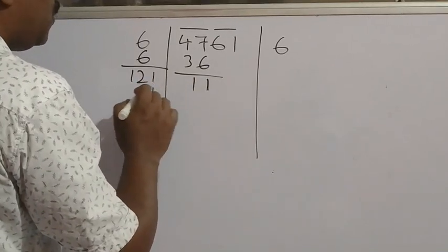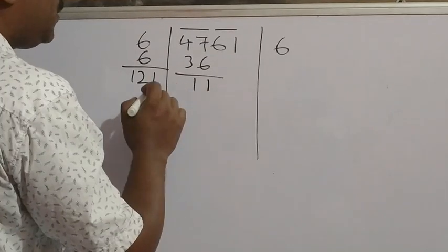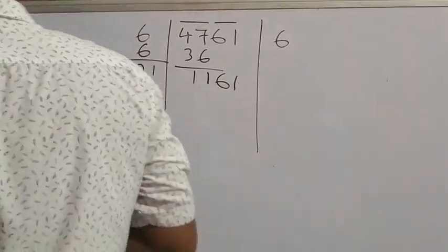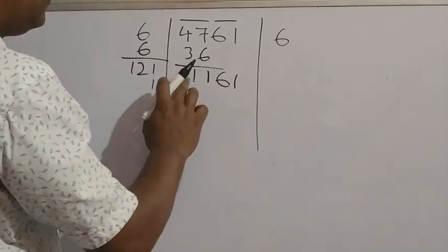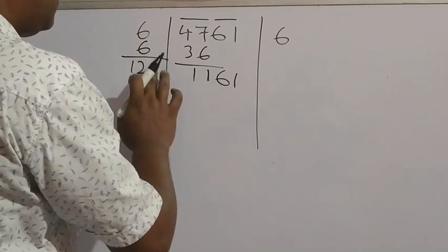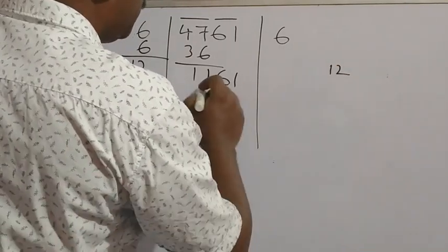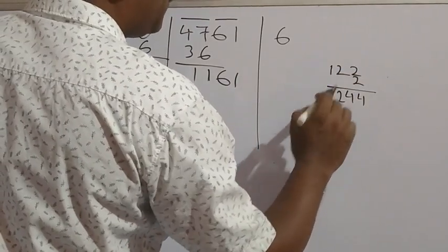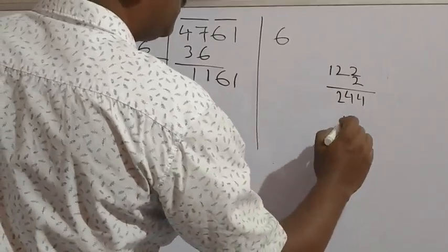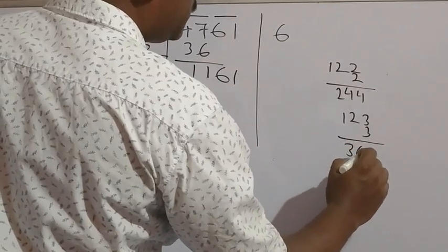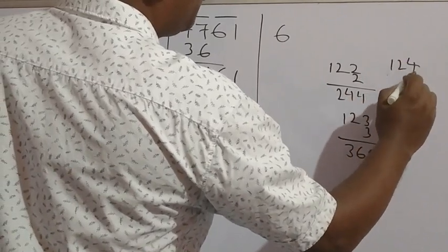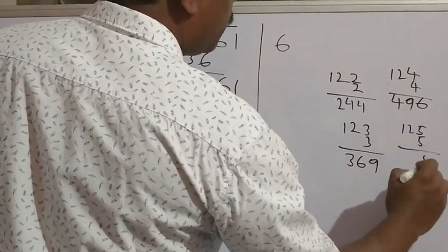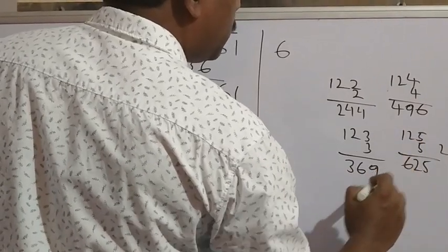If we try 1: 121 × 1 = 121, but 11 is there — 121 is more than 11, so we need to bring 61 down. The total number is 1161. Try numbers in the unit place: 2 gives 244, less than 1161; 3 gives 369, less than 1161; 4 gives 496, less than 1161; 5 gives... continuing checking each digit 1 by 1 up through 7 and 8.